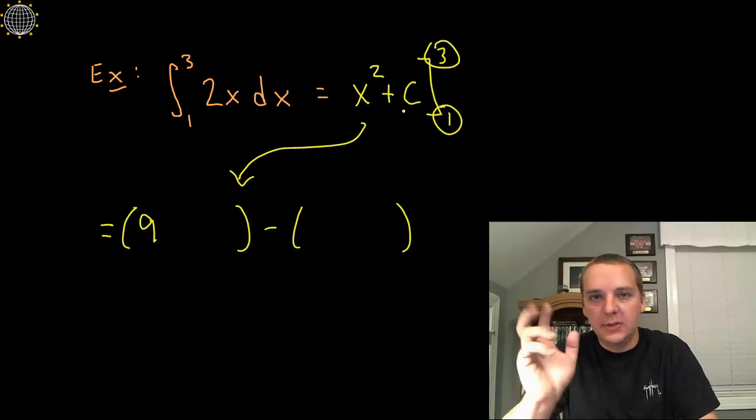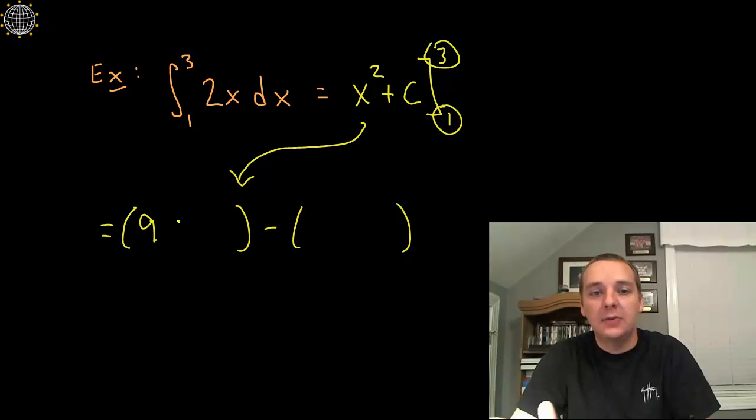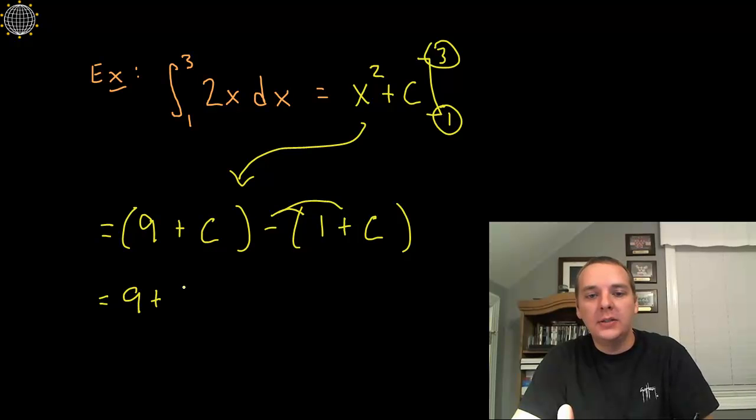Now I don't know what this mystery C is, so I just have to leave it plus C. So 9 plus C, and then you plug in a 1 and you get 1 plus C. Distribute the negative, we get 9 plus C, minus 1 minus C.